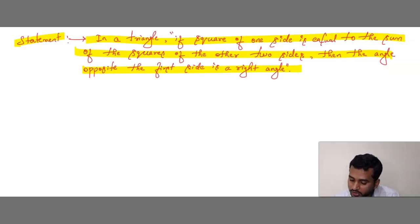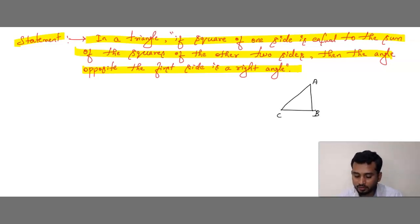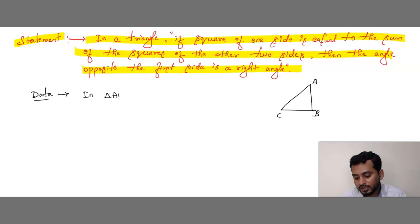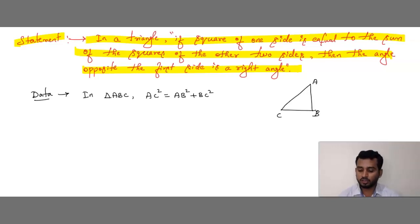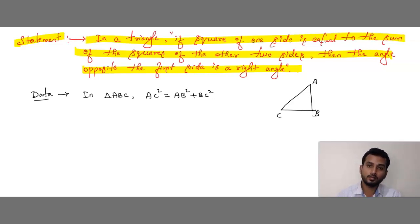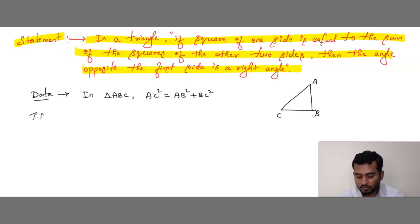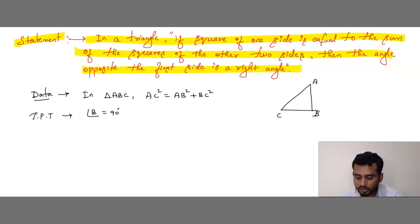Now, what do we do here? First, I am going to draw a triangle. Let me name this triangle as ABC. As per the given statement, we write the data. In triangle ABC, it is given that AC² = AB² + BC². What we have to prove is that angle B = 90°.